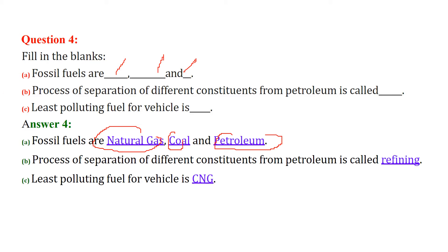The process of separation of different constituents from petroleum is called refining. Refining is how we separate the different parts or constituents of petroleum. The least polluting fuel for vehicles is CNG.